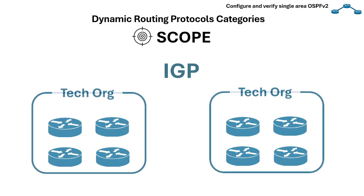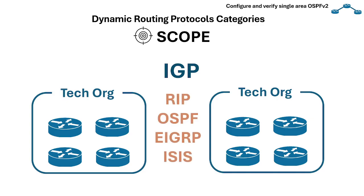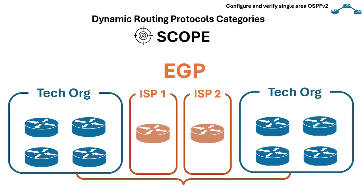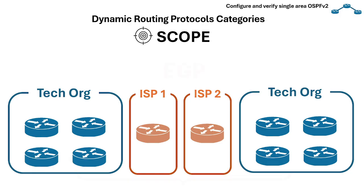IGP is a routing protocol used within the boundaries of a single organization. Examples of routing protocols used for IGP are RIP, EIGRP, OSPF, and IS-IS. EGP is a routing protocol that exchanges routes between different organizations. Today, BGP is the only exterior protocol in use.